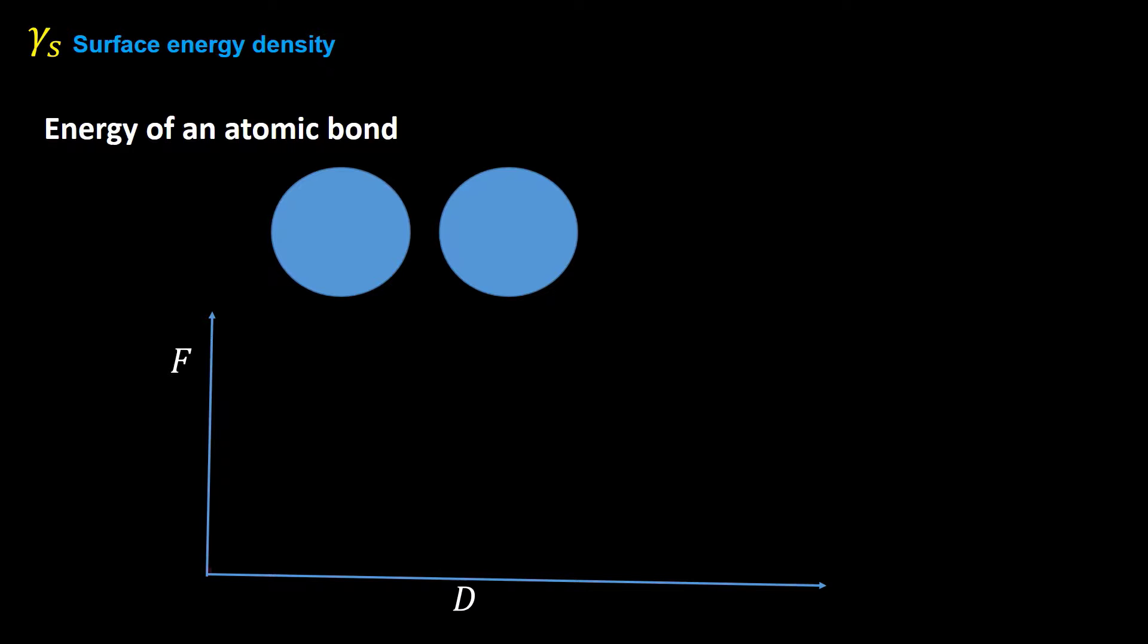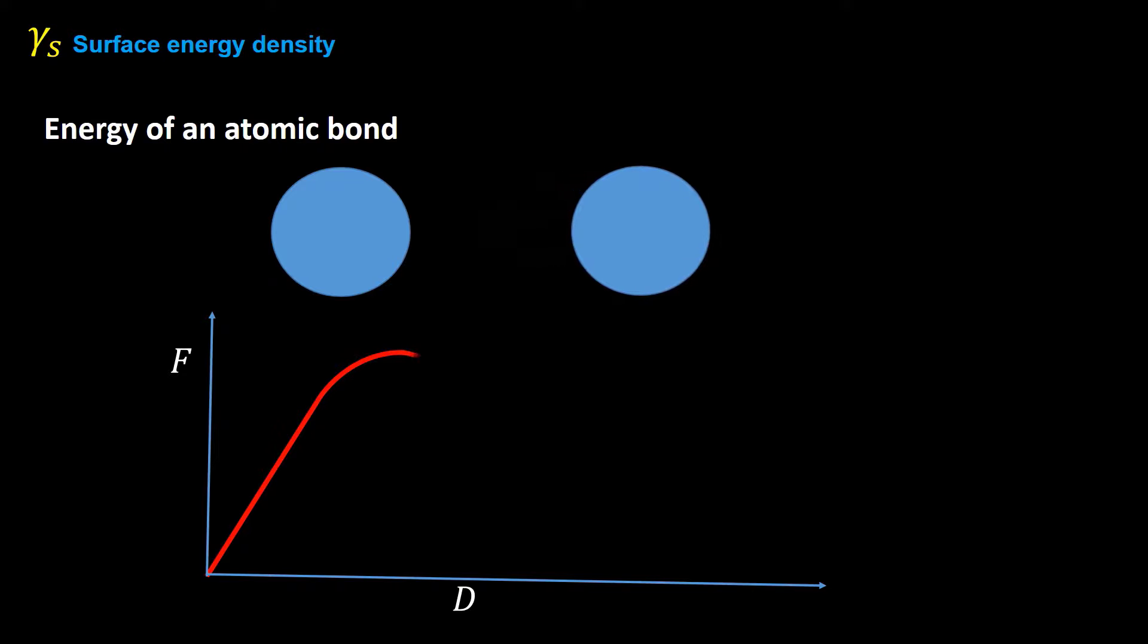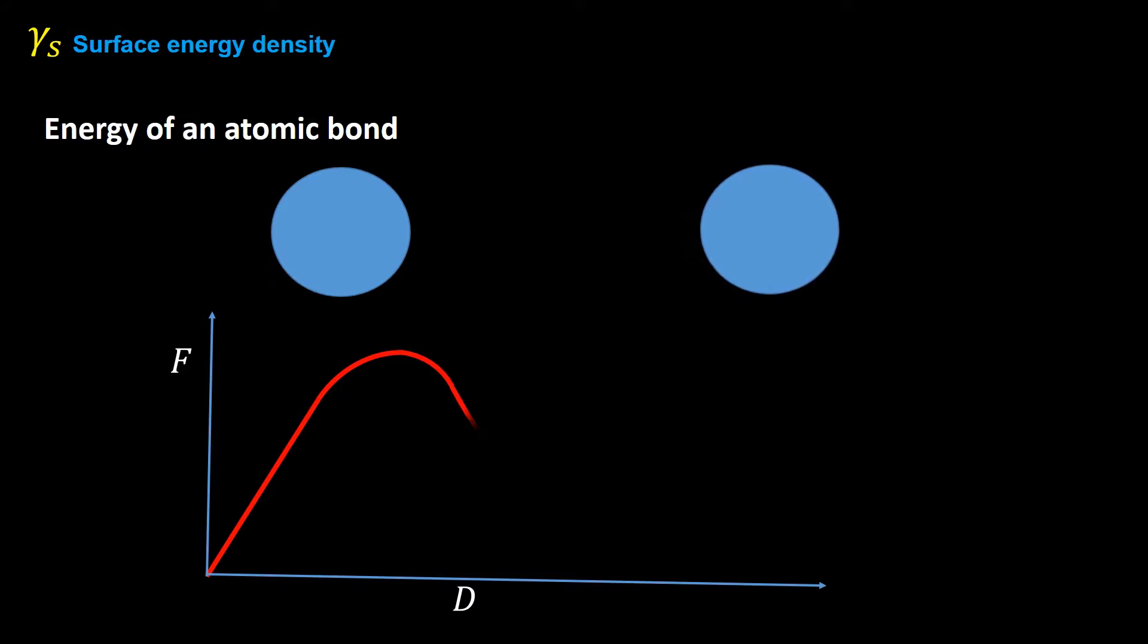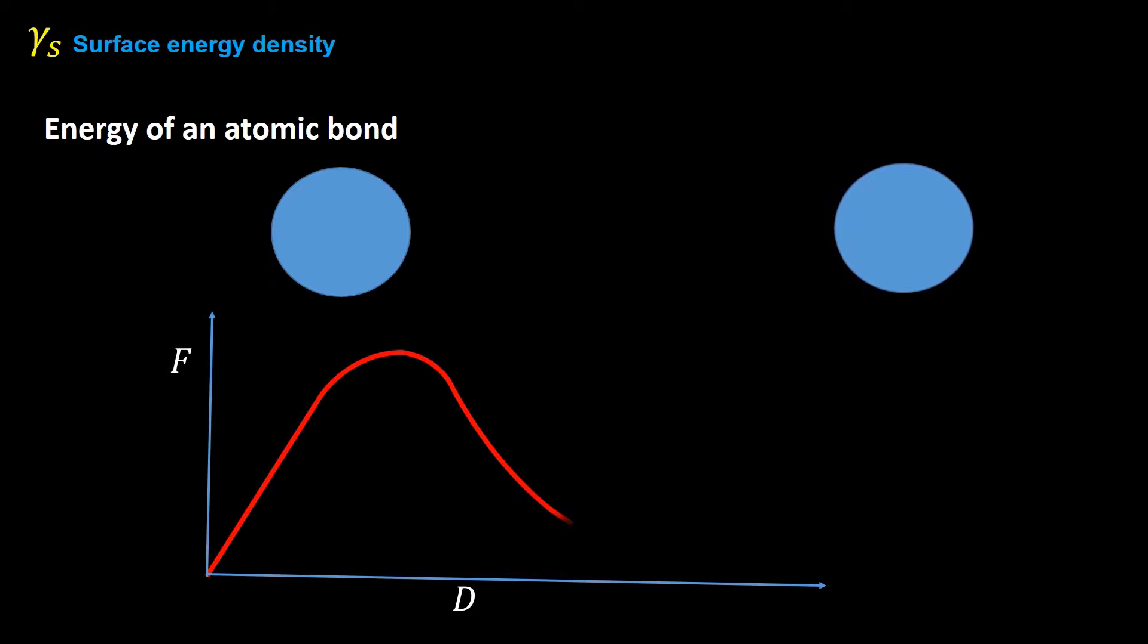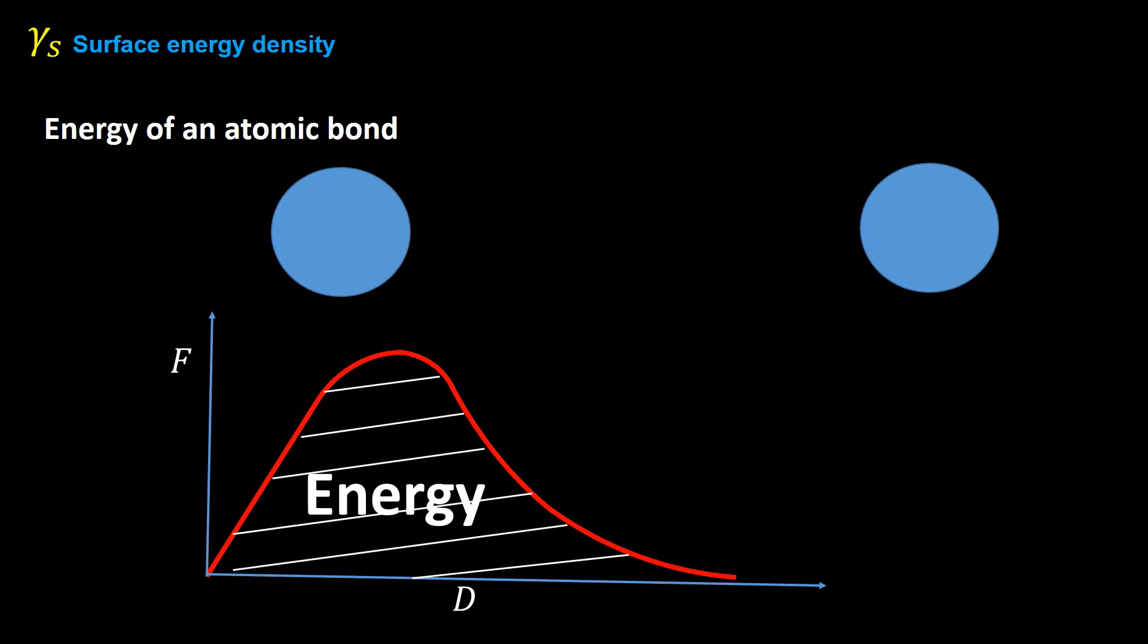The force required to move the atom initially increases as the atoms are separated. But as the distance increases, the atoms eventually become separated so far that they no longer attract each other. By this point, the force will have leveled out, then begun to decrease before eventually returning to zero. Please note that the area under the force displacement curve represents the energy required for separating two atoms and known as the energy of an atomic bond. In the case of a crack growing in a solid, several atomic bonds are broken.